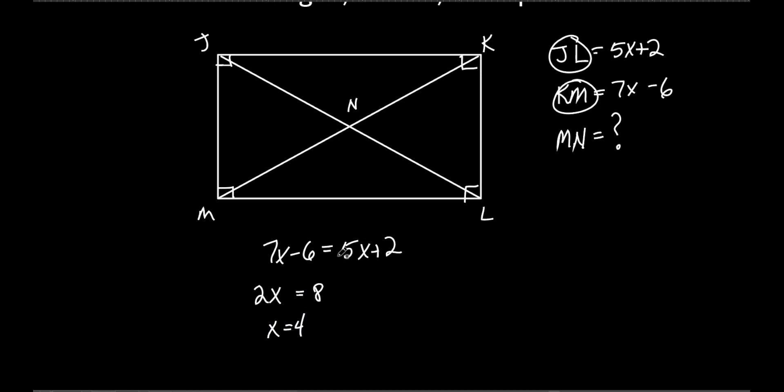Now that's not my answer. What do they ask for? MN, correct? I don't even know what MN is. They don't tell me anything as far as in terms of x or anything. But I could find the whole entire thing. What's the whole entire thing? MK or KM, right? And what is that? That's this, isn't it?